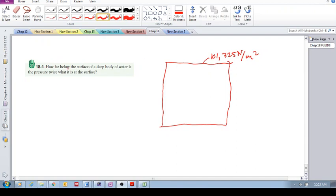Checkpoint 18.4: How far below the surface of a deep body of water is the pressure twice what it is at the surface? Imagine this is water, and how far below the surface of the water is the pressure twice what it is at the surface?